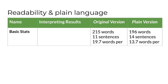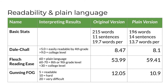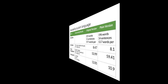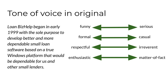Here are the stats for the original and plain language versions of the About Us page. The plain version is slightly shorter with more sentences, but they're shorter on average. There was an improvement in all three of the readability scores shown here, but they're relatively small. Whether the plain version allows readers to get the message more easily and quickly is a question we can't answer without actual testing with representative readers. Take a second to read the first paragraph of the original. Here's how I perceive the tone of voice in the original: a little bit on the serious side, neutral on the formal-casual dimension, and highly respectful and matter of fact. There's no way to know for sure how the intended audience perceives the tone without testing.